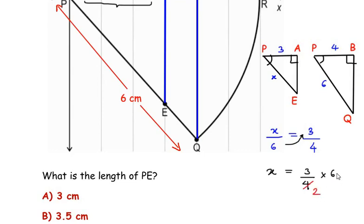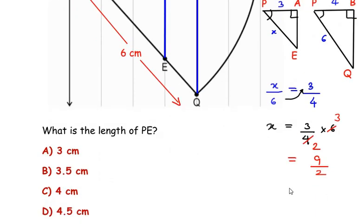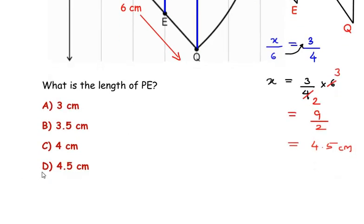4 and 6 go in the table of 2, so 2 times 2 is 4 and 2 times 3 is 6. We get here 3 times 3 is 9, 9 over 2. When we divide 9 over 2, we get the value of PE or x as 4.5 centimeters. So this is the length of PE.